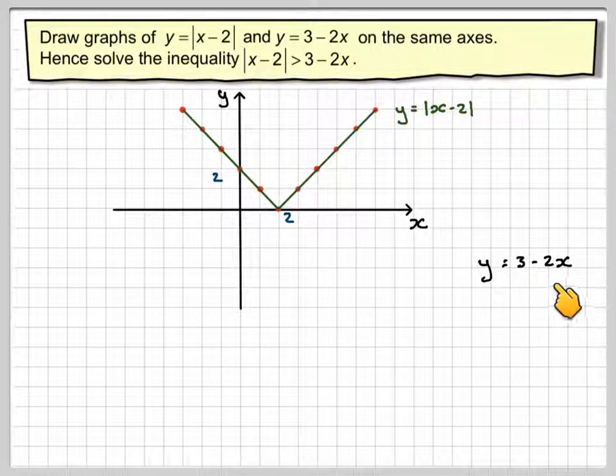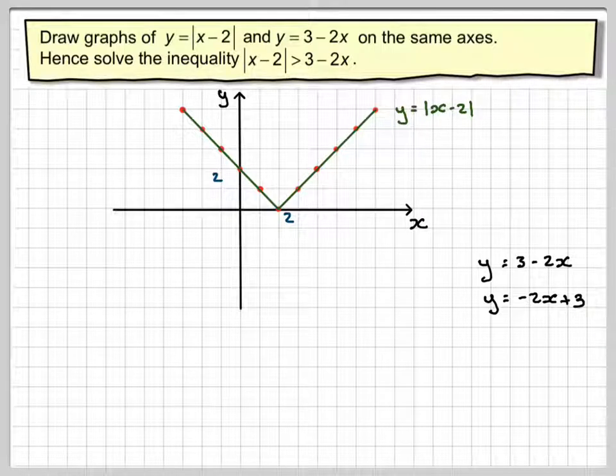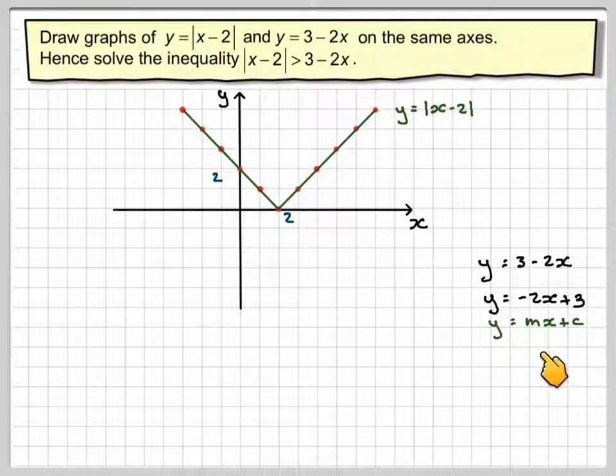For y equals 3 minus 2x, probably better to think of it as y equals minus 2x plus 3, and then use the idea that y equals mx plus c. m is minus 2, c is 3.